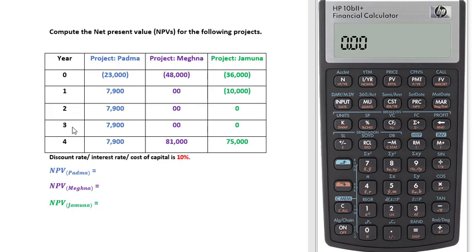Each project has a four-year lifetime. Year zero means the beginning of the investment period, and brackets indicate cash outflow or negative cash flow. Our rate of interest, or discount rate, or cost of capital, is 10%. To find NPV, first ensure the calculator memory is clear.